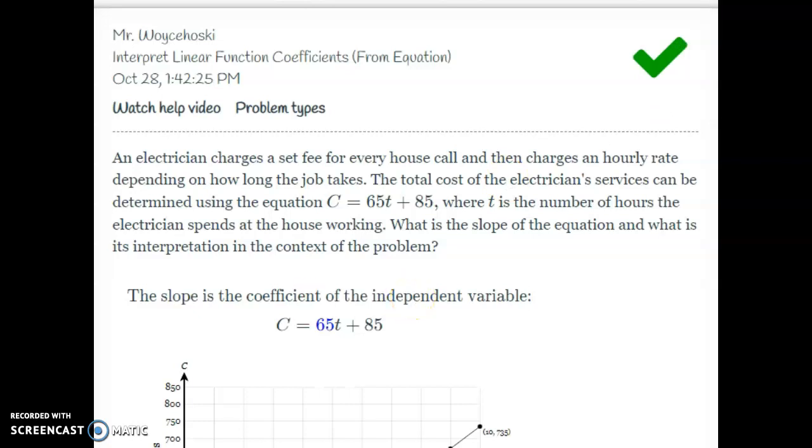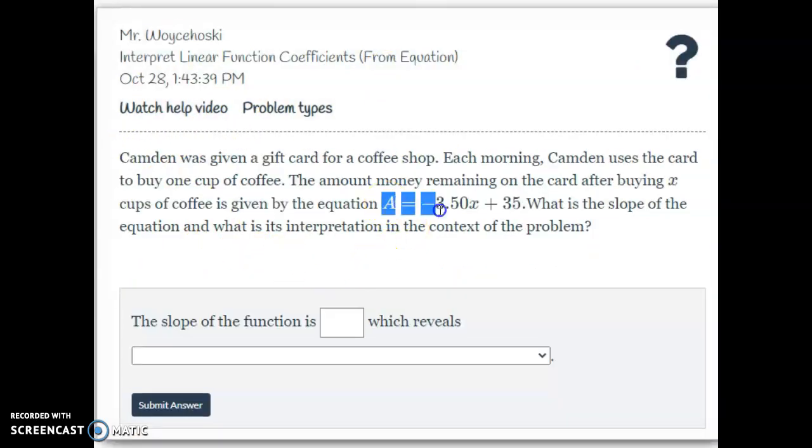But that's really what you're doing today is just getting a sense of if I look at an equation, what can I tell about that equation just by looking at it? So without even reading the story, I know that I'm starting at $35 something and I'm losing $3.50 every X. And this one X is cups of coffee. So I'm losing $3.50 for every cup of coffee. It looks like maybe this $35 is like a starting amount, maybe a gift card. Yep, he's given a gift card. It's got $35 on it.